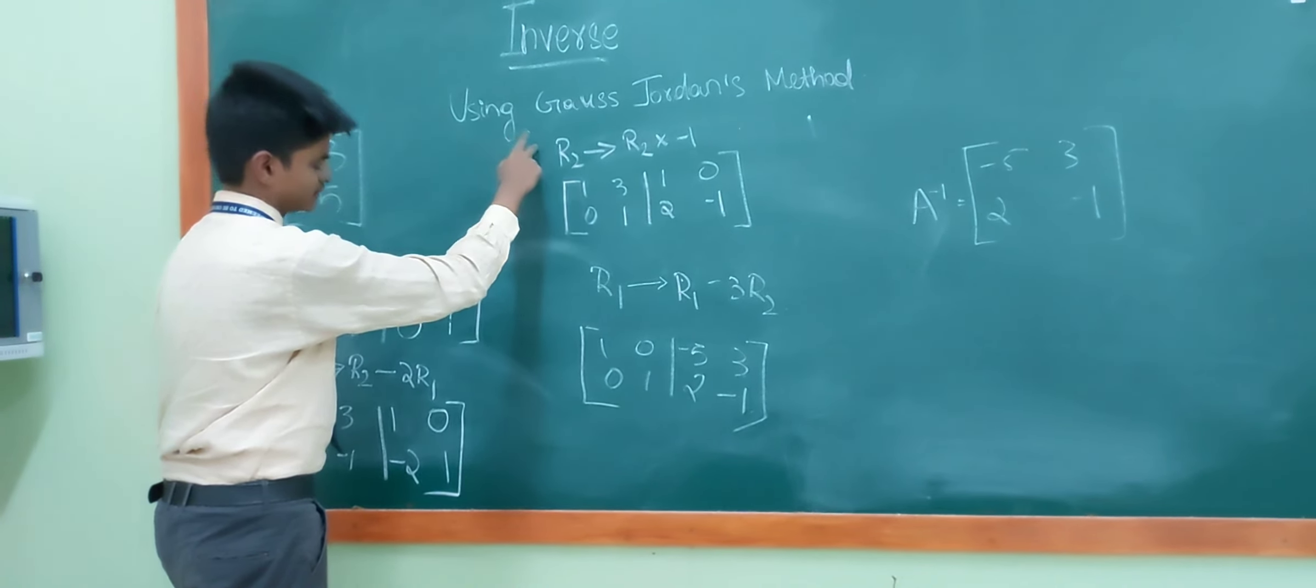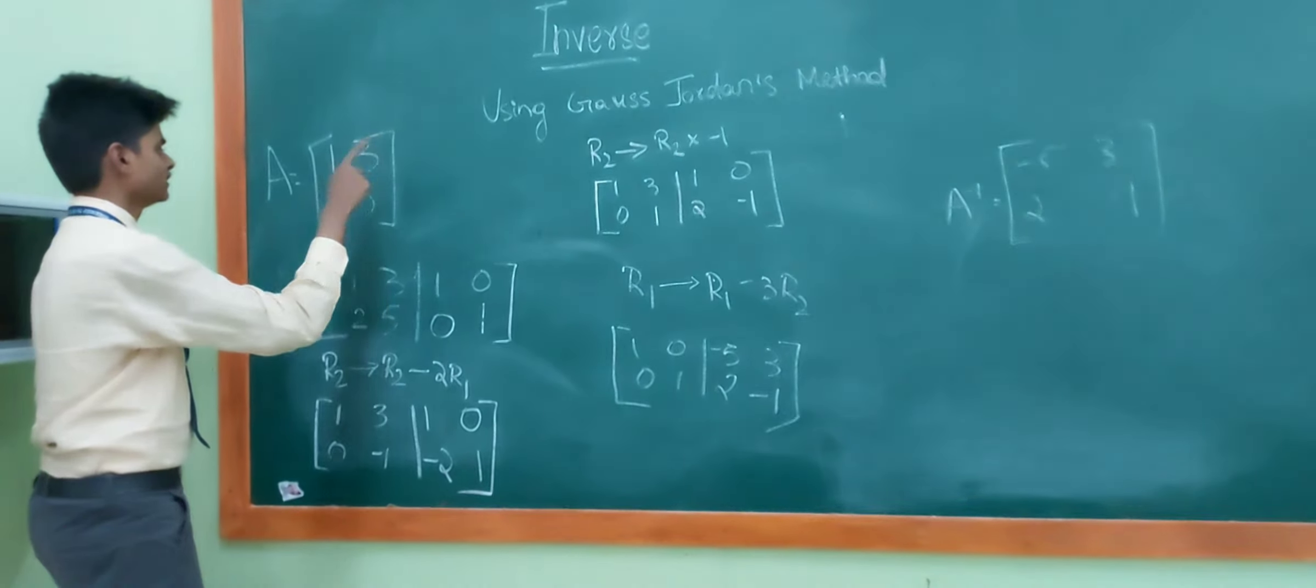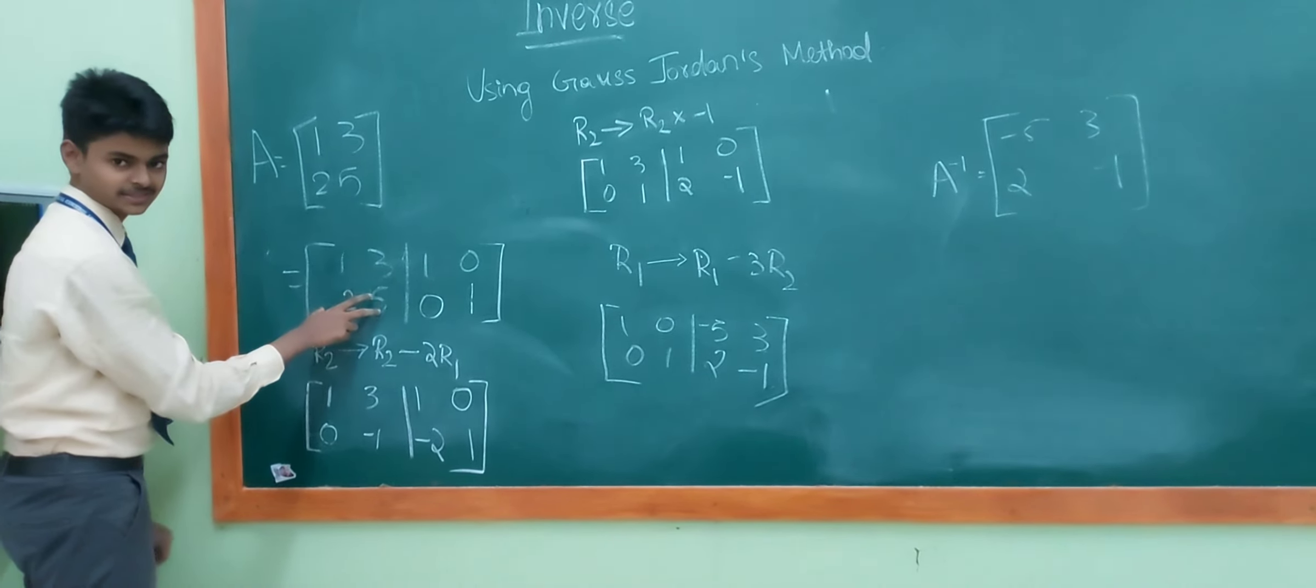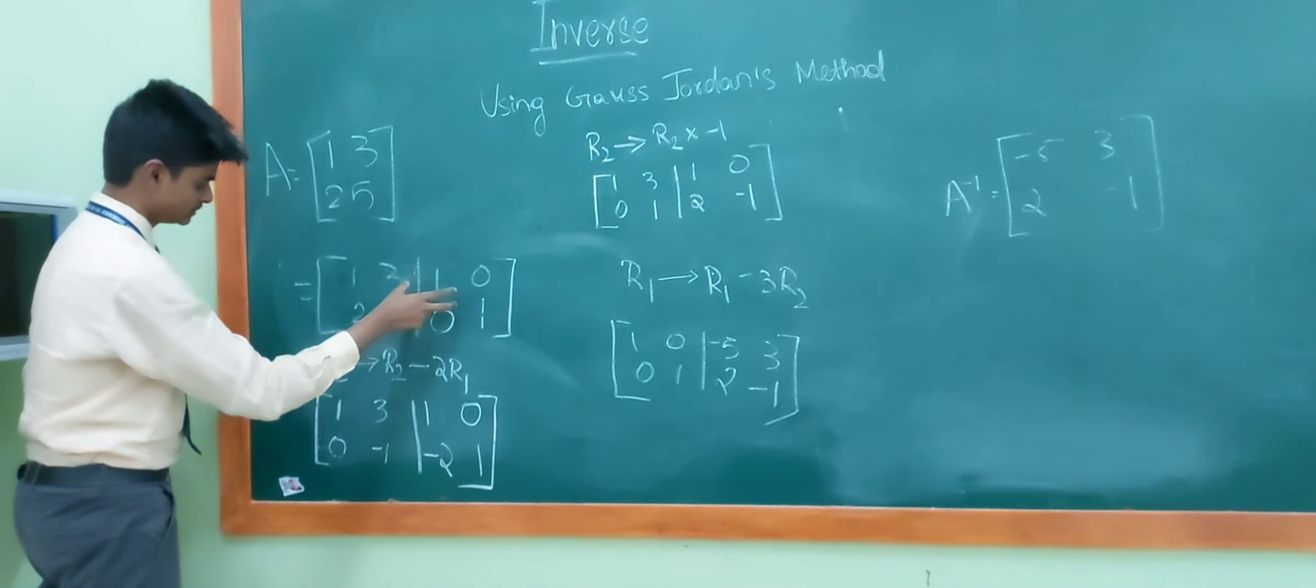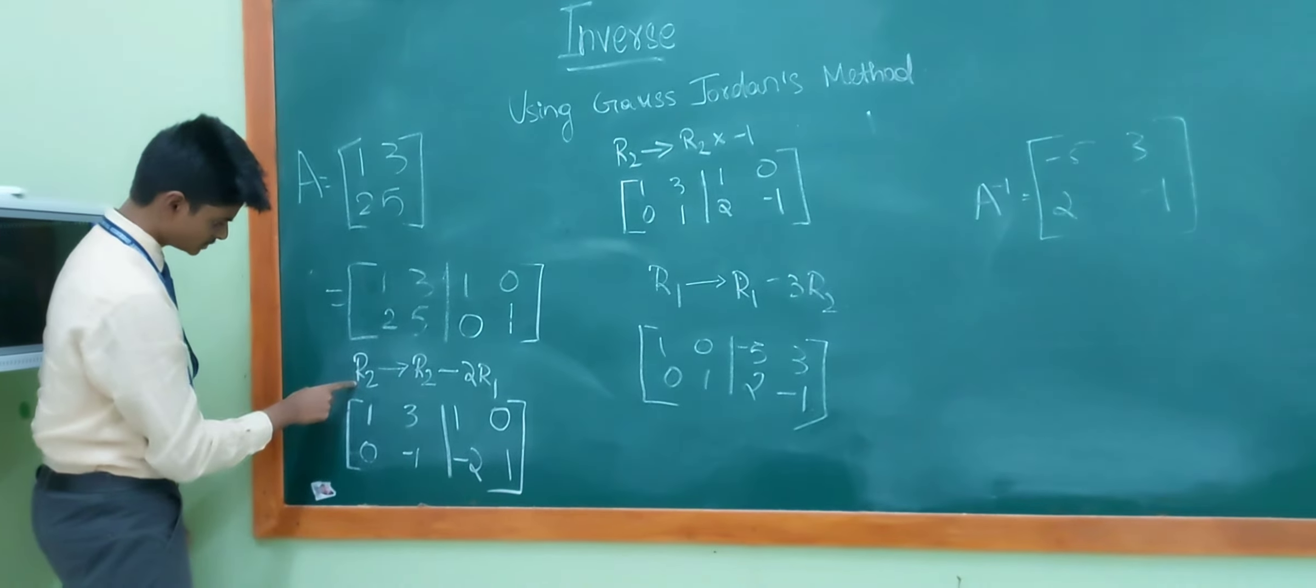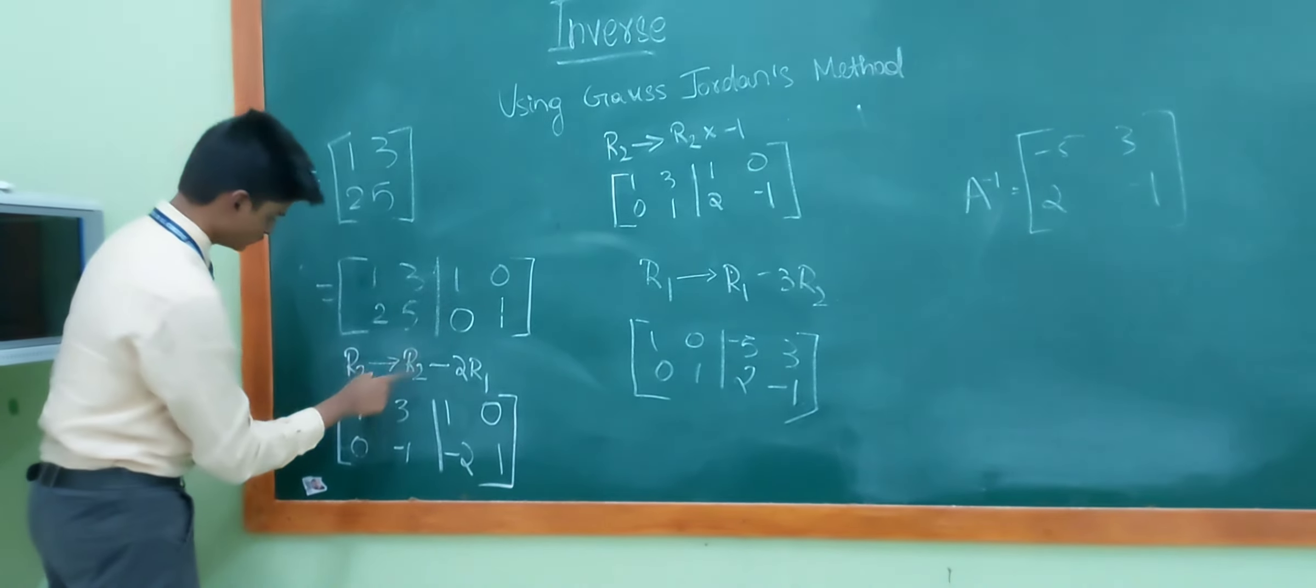Today, we will learn how to find the inverse of the matrix. For this, we will use Gauss-Jordan method. We will find it with an example. That is 1, 3, 2, 5. So, we will keep this matrix on the left hand side and we will use an identity matrix on the right hand side so that we can find the inverse of the matrix. The main ability is to convert this 1, 3, 2, 5 into 1, 0, 0, 1.